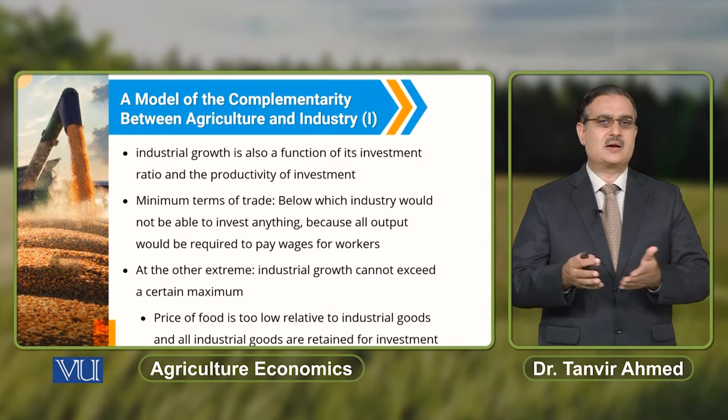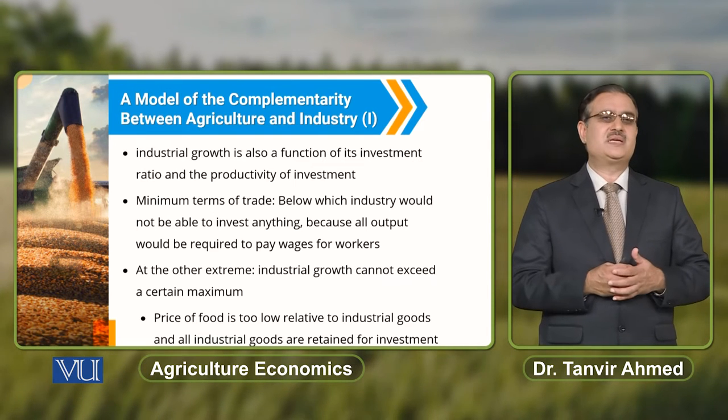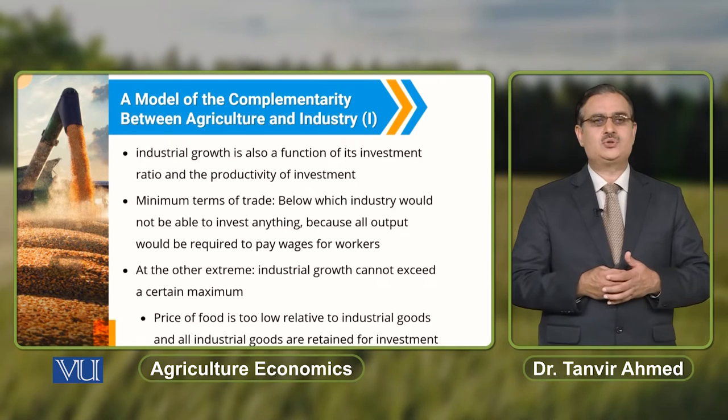If we replicate this with reference to industrial growth, industrial growth is also a function of its investment ratio and the productivity of investment. When we talk about minimum terms of trade, we refer to the terms of trade below which industry is not able to carry out any investment. At this point, the whole output is required to make payment to wages for the workers. At the other extreme, food prices are too low relative to industrial goods and the agricultural sector is not in a position to purchase the goods produced by the industrial sector.